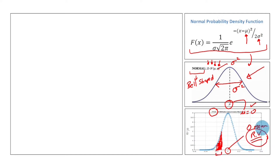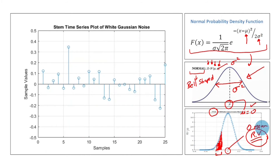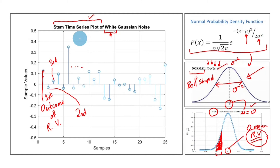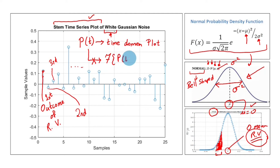Let us relate this random variable with a random process — shown here as a stem time series plot. Let us hold the 'white' aspect aside for the time being. Each value in this plot is an outcome of a random variable: the first outcome, the second outcome, the third outcome, and so on. This random process can be expressed as P(t). Note that this is a time domain plot.